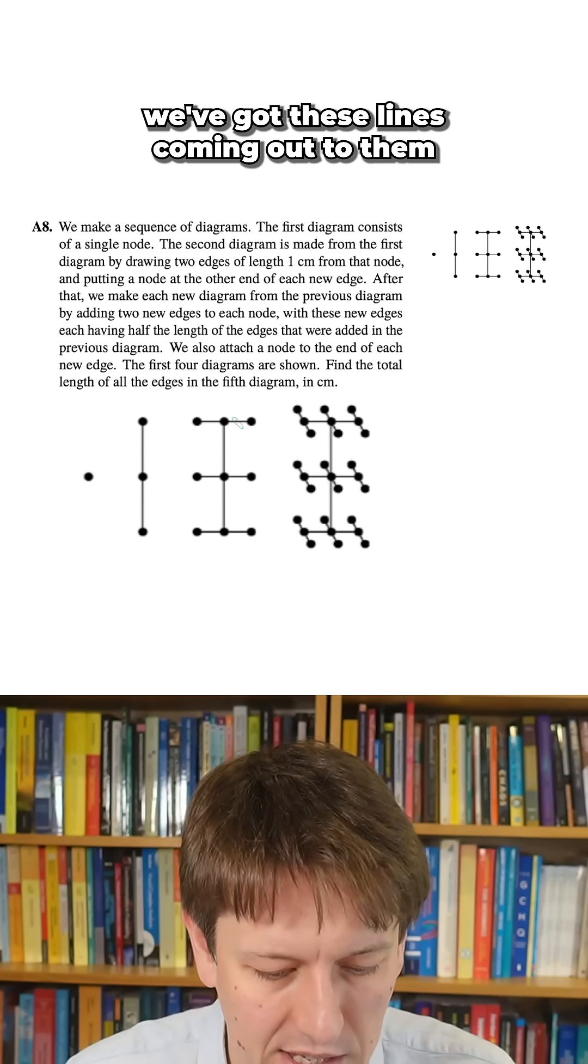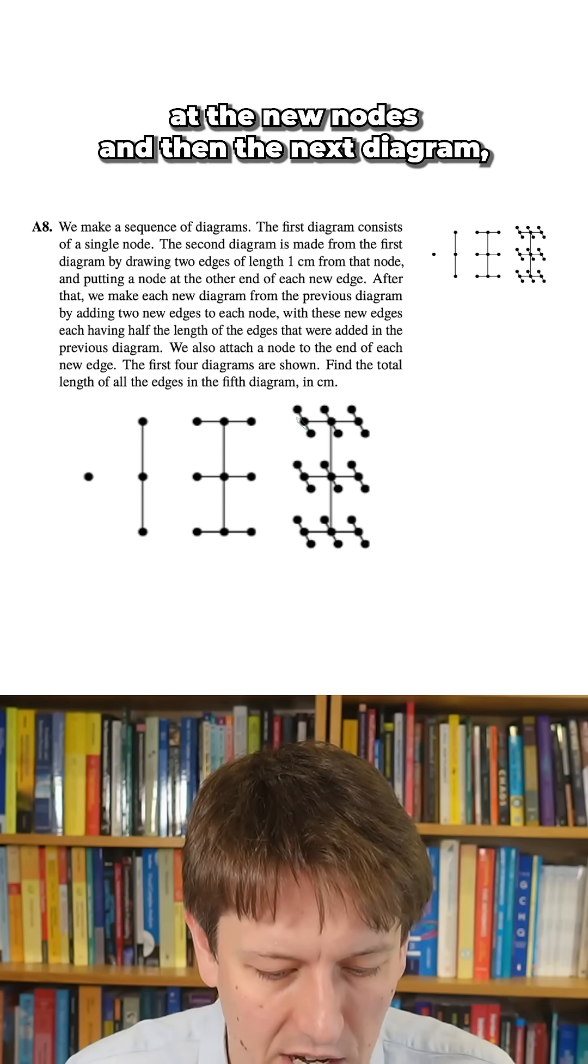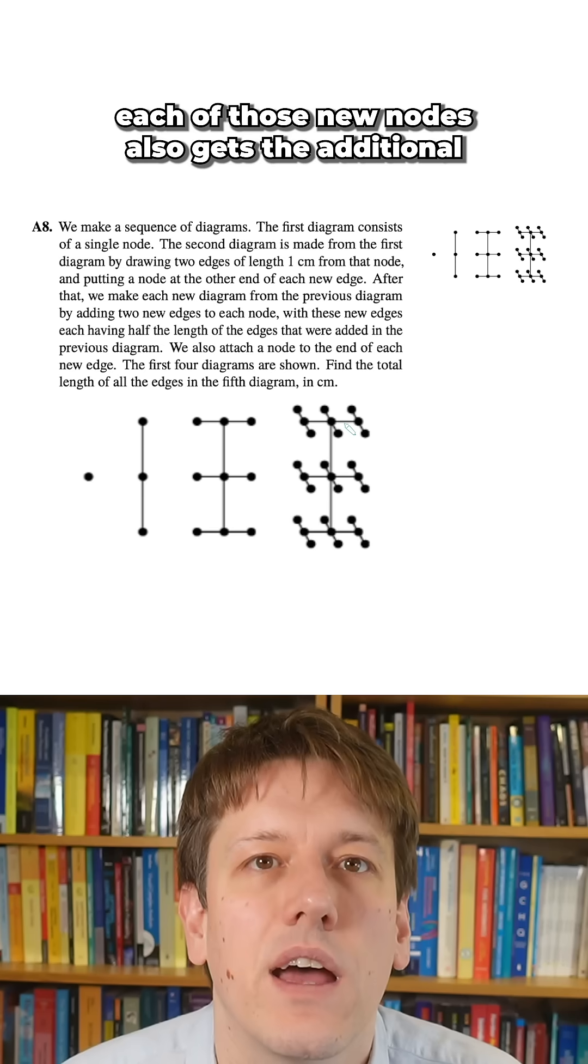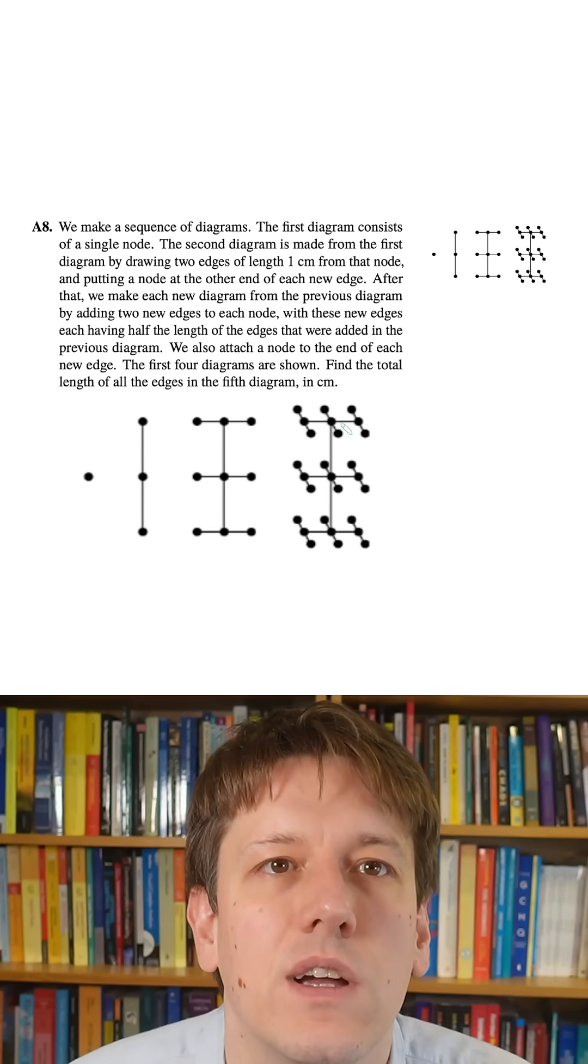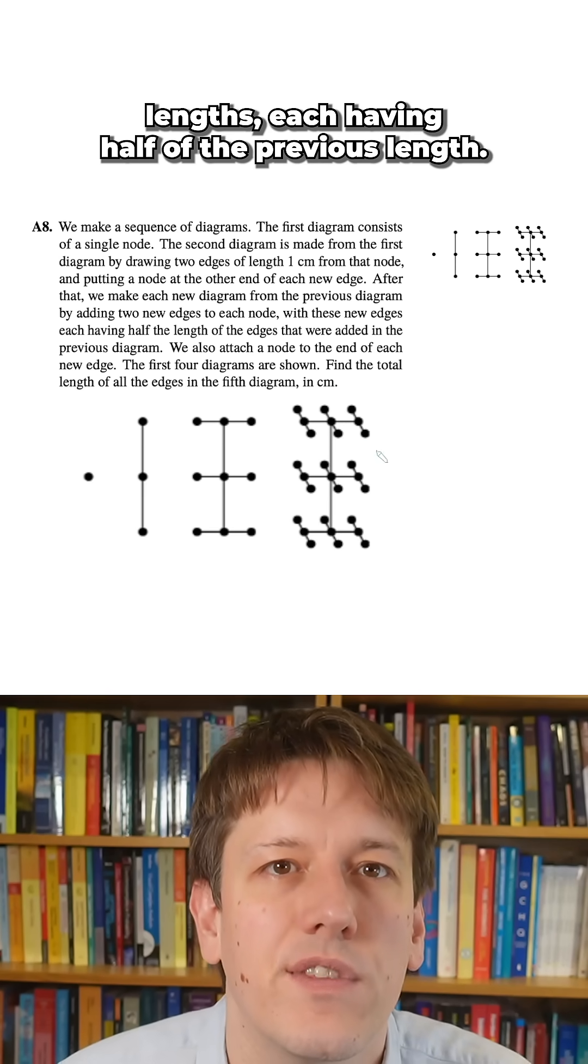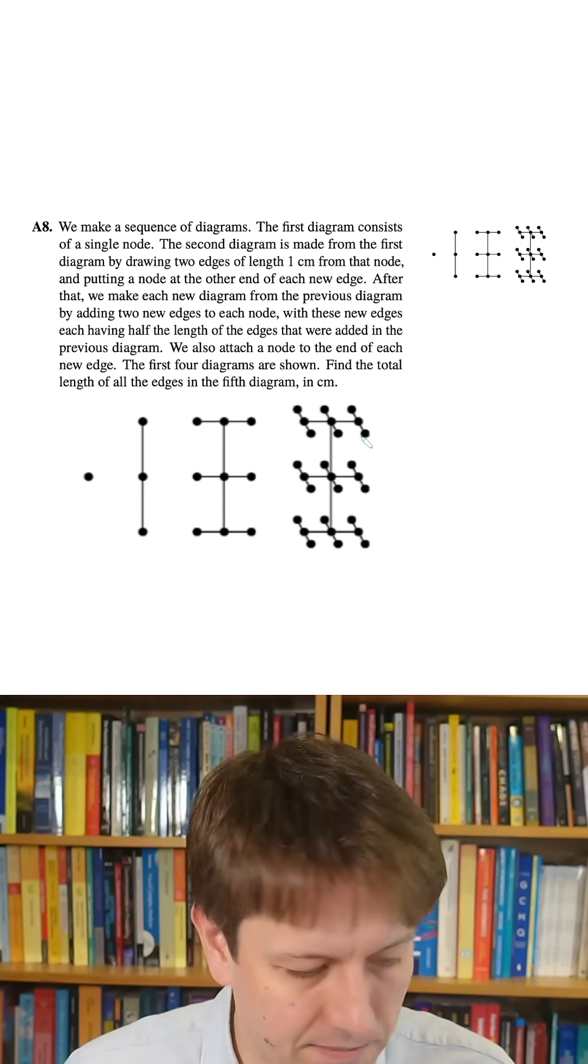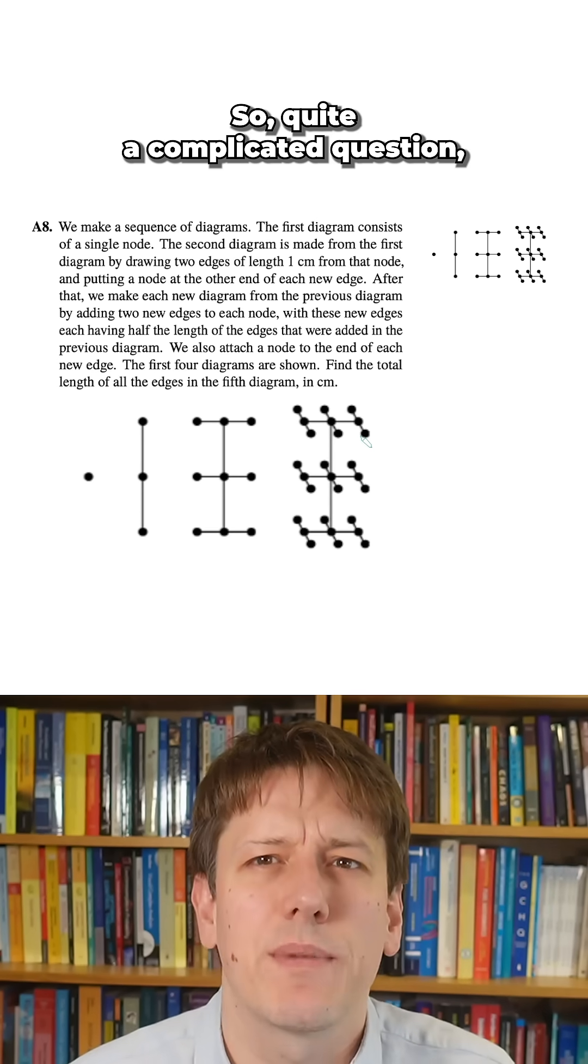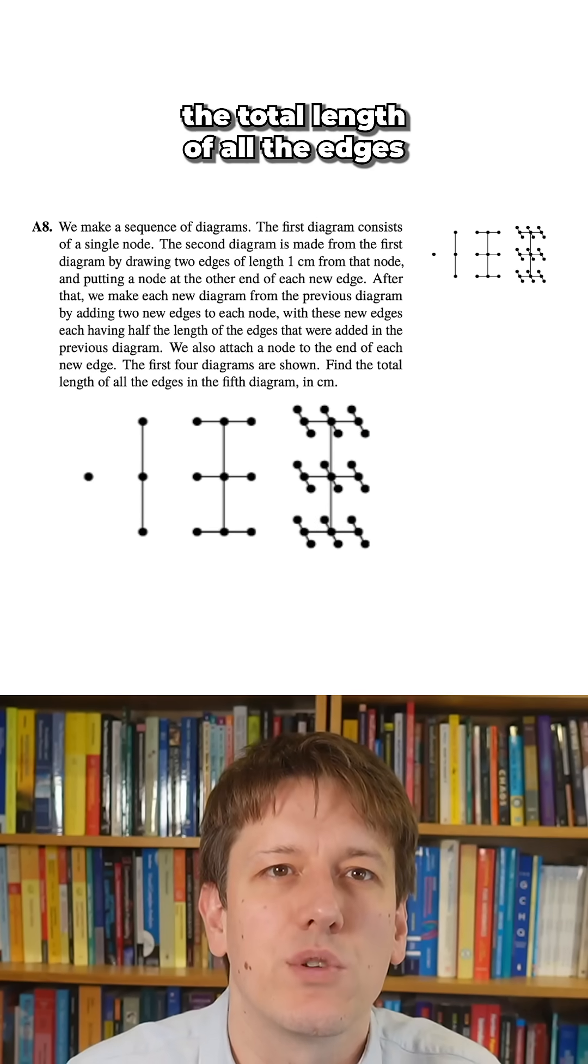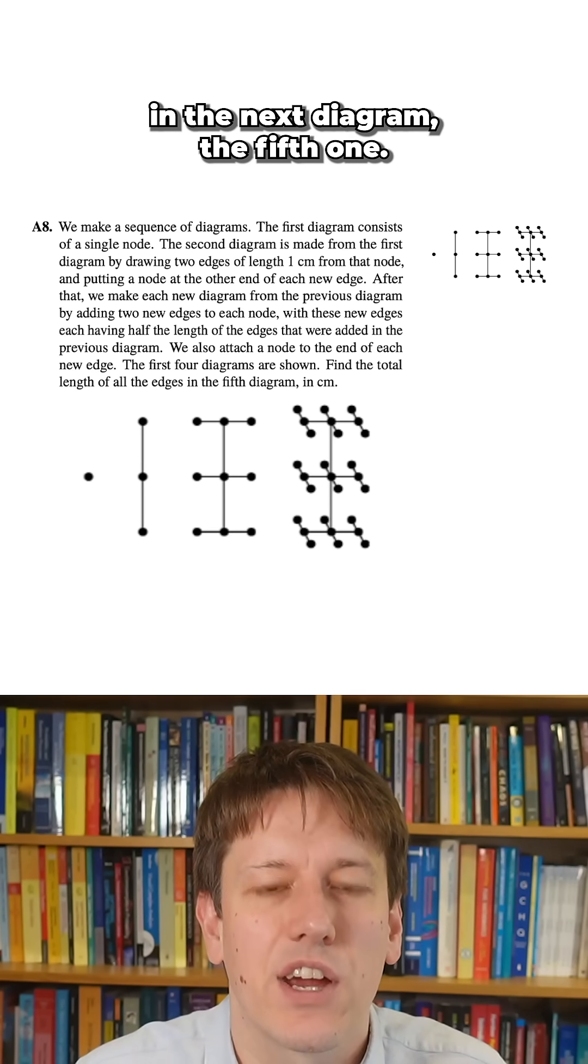We see four diagrams here as shown, so we can see that from each of those nodes we've got these lines coming out of them with the new nodes, and in the next diagram each of those new nodes also gets the additional lengths, each having half of the previous length. So quite a complicated question, but we just need to know the total length of all the edges in the next diagram, the fifth one.